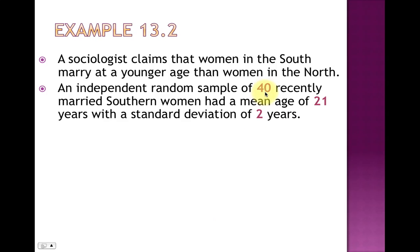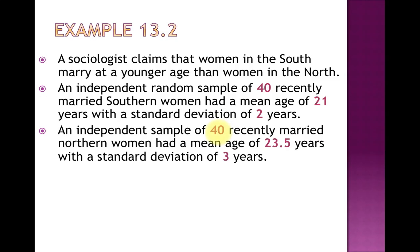When we read this problem, things we should understand and read for are the size of the sample, the sample mean — 21 — and the standard deviation, which is 2. Since 40 is a sample and the sample has a mean of 21, it implies that this standard deviation is for the sample. We also have to read for the other population. We have the population for women in the South with a sample, and then we have the population for women in the North, where we should have a sample as well. We have a sample of 40 for the Northern women, a mean of that sample of 23.5, and a standard deviation of that sample of 3.